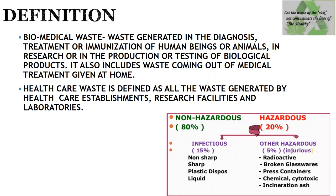There are two types of biomedical waste: non-hazardous (80%) and hazardous (20%). Hazardous waste includes infectious and other hazardous types. Infectious waste includes non-sharp items, sharps, plastic disposables, and liquids — these can cause infection from one person to another. Other hazardous waste includes radioactive material, broken glassware, pressurized containers, and chemicals.